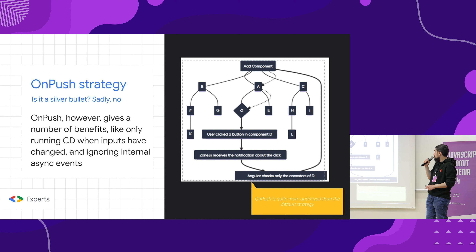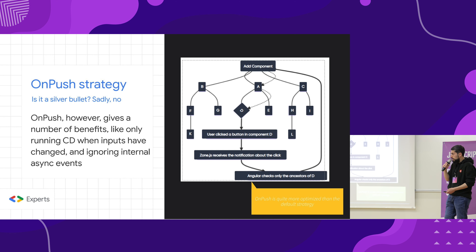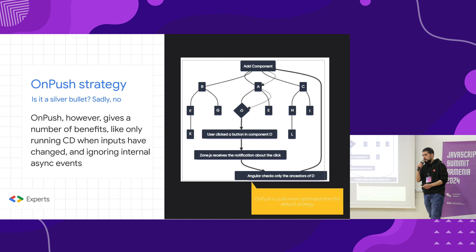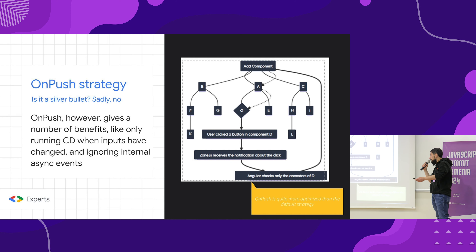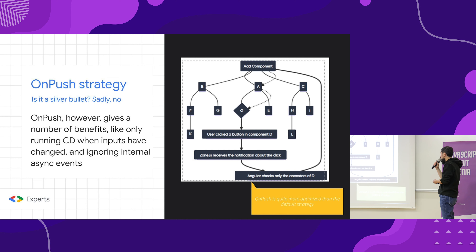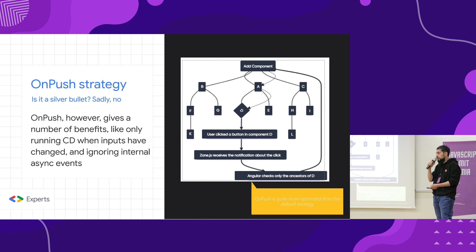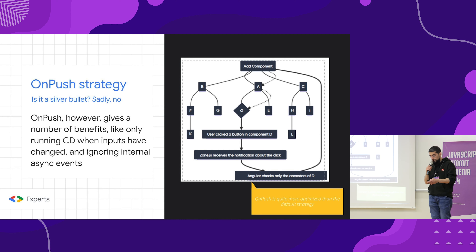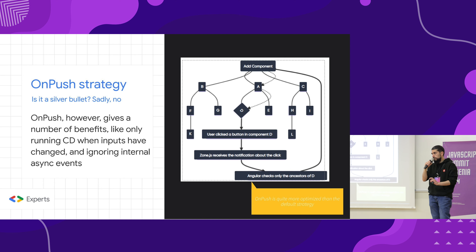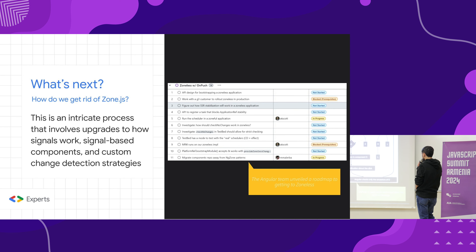Why am I talking about the OnPush strategy specifically? We know that OnPush checks the component only if its inputs have changed — though that's not entirely exactly what it does. It also doesn't perform deep checking and ignores sibling components. In this scenario, the component with a button click notifies Zone.js, but only its ancestors are being checked, because it is marked as OnPush. Even without going zoneless, there are optimizations that use this approach. You can use OnPush now with some strategies and understand how it can improve performance.